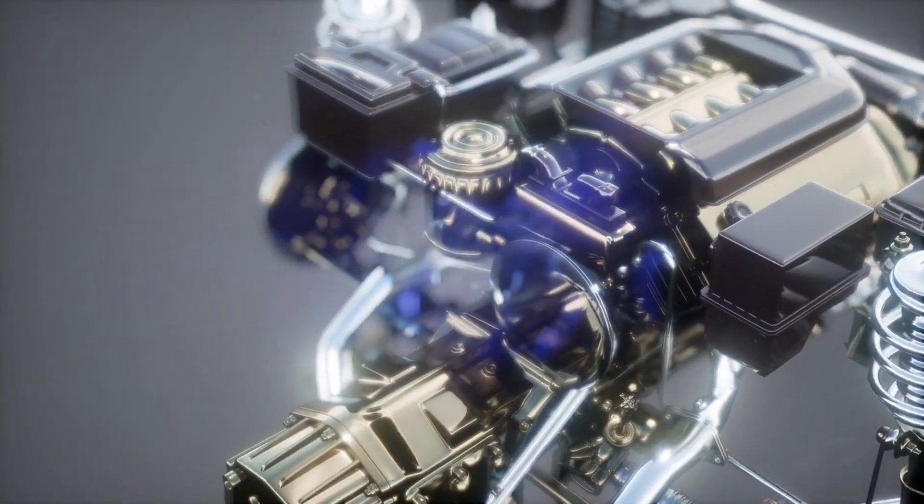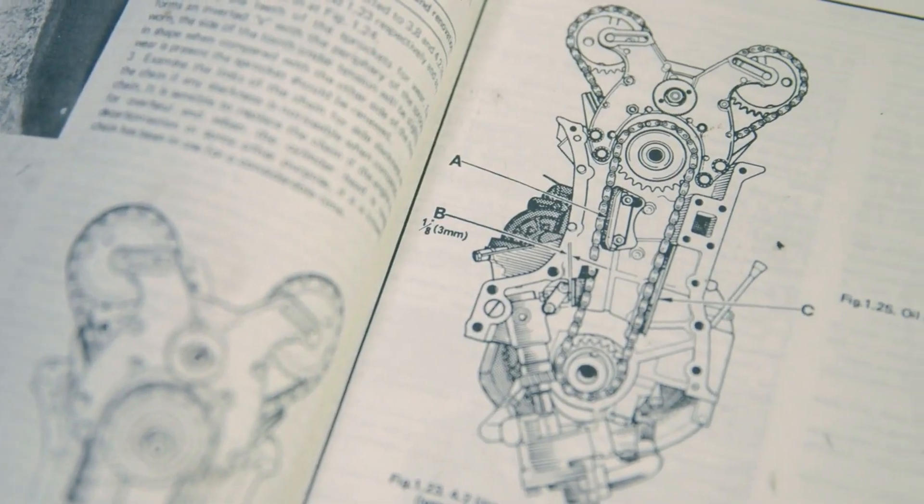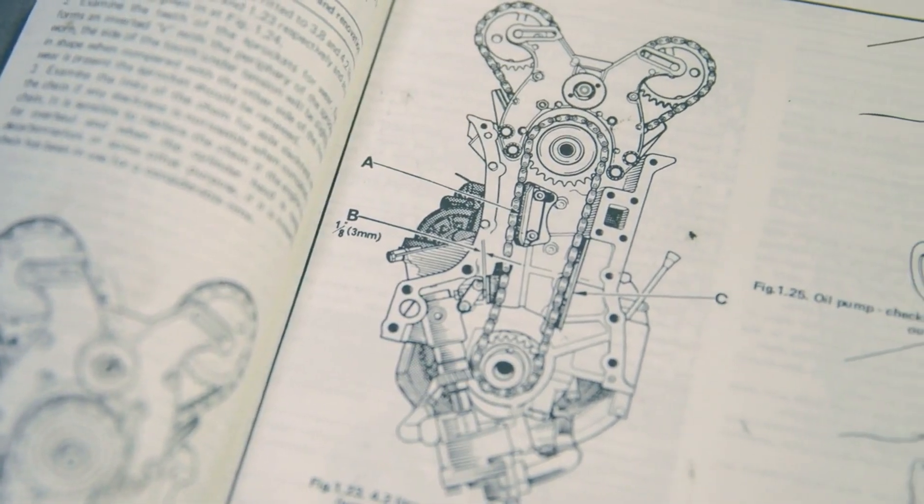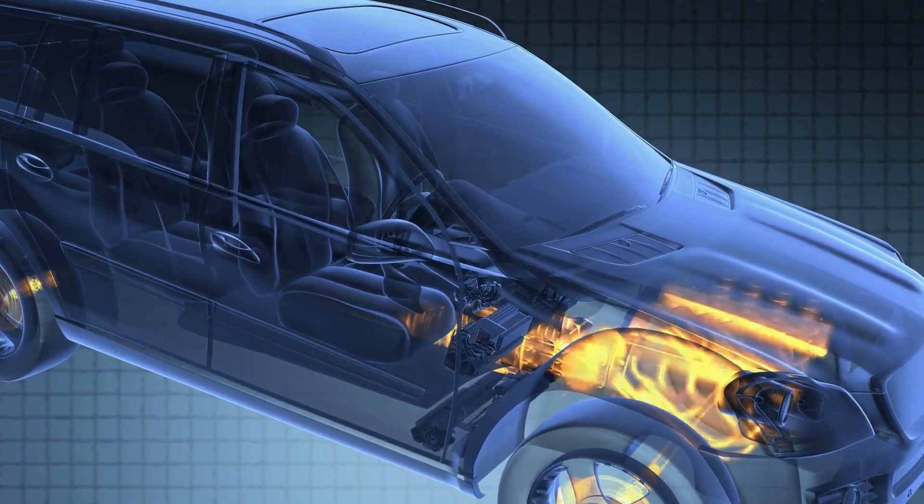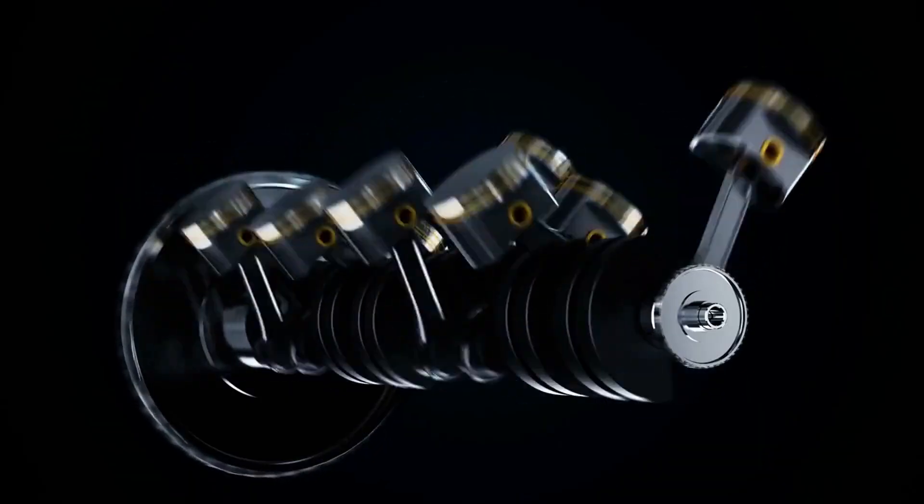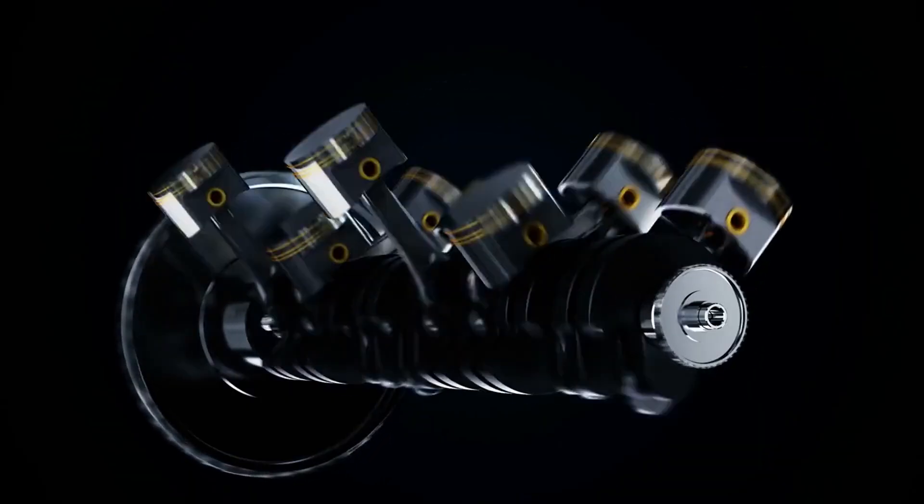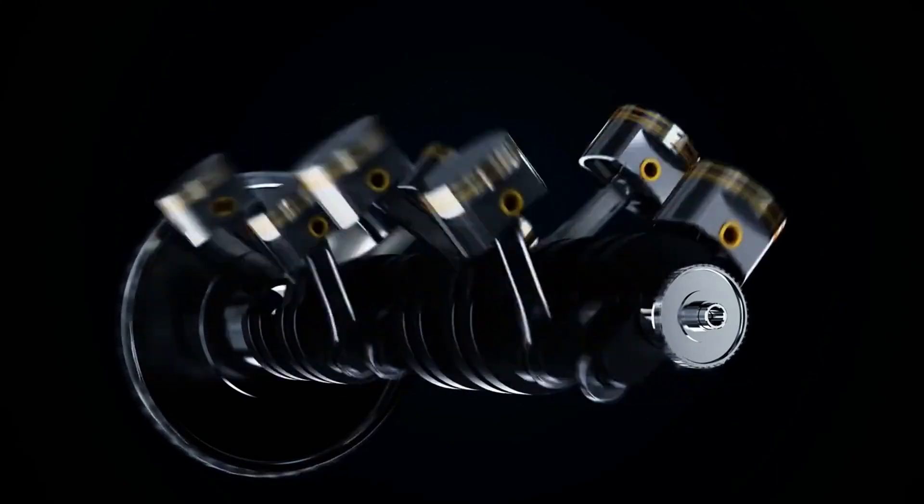Every internal combustion engine works on the same basic principle. It burns fuel to create power by moving a piston up and down inside a cylinder. This piston is connected to a crankshaft, which turns the motion into usable power, like turning the wheels of your bike or powering a lawnmower.